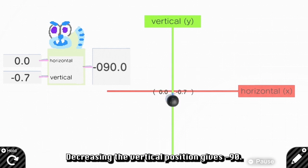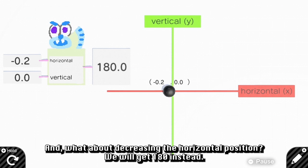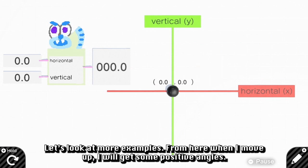Decreasing the vertical position gives the output of negative 90. And what about decreasing the horizontal position? We will get 180 instead. Let's look at more examples.